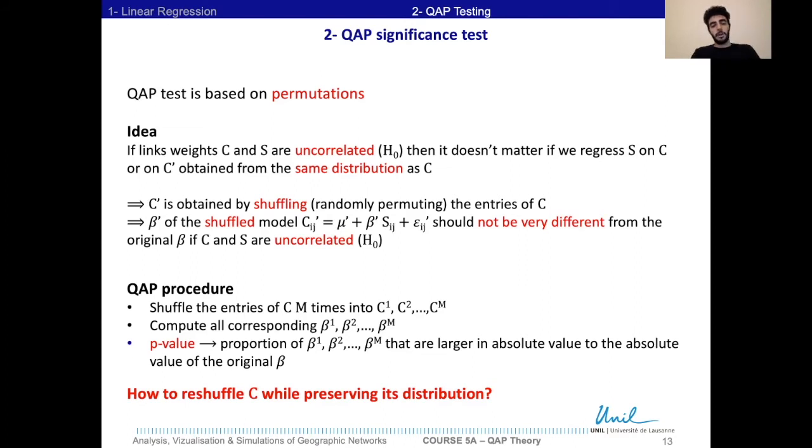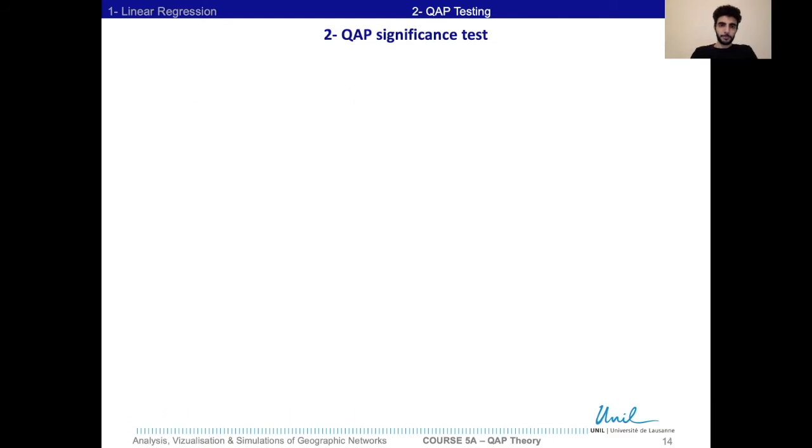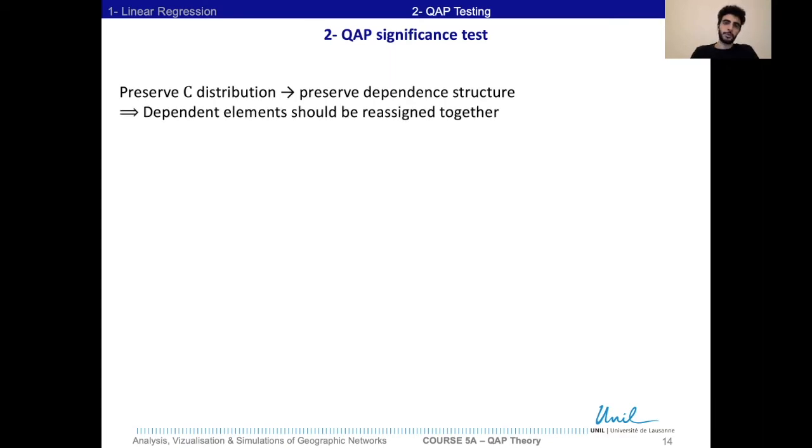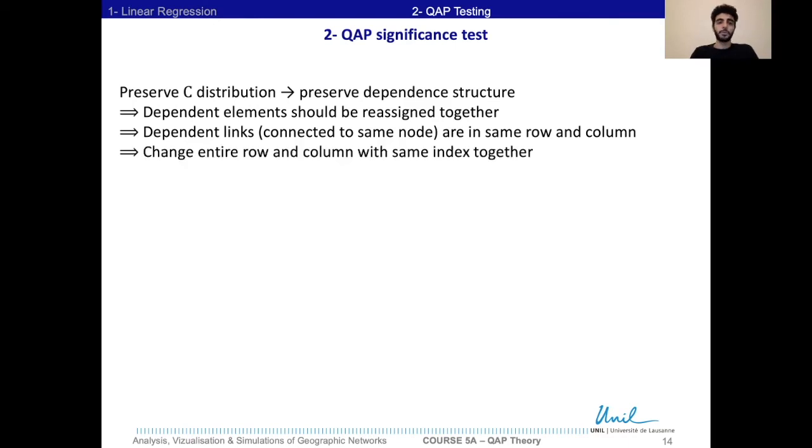The question remains: how to reshuffle C while preserving its distribution? Because the idea is that C' should be obtained from the same distribution as C. Preserve the distribution of C means preserving, importantly, the dependent structure. So the dependent elements should be reassigned together. We know that the dependent links, that is the ones connected to the same node, are in the same row and column of the matrix C. So what we need to do is to change the entire row and column with the same index together.